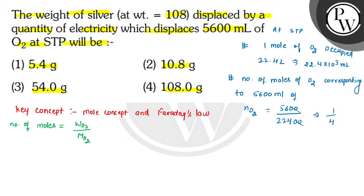And 1 mole of silver requires 1 mole of electrons. Because when silver is oxidized to silver plus, it releases 1 electron. So here we need only 1 electron.